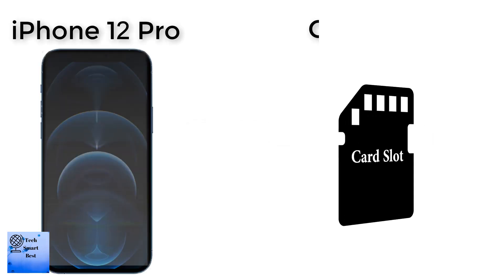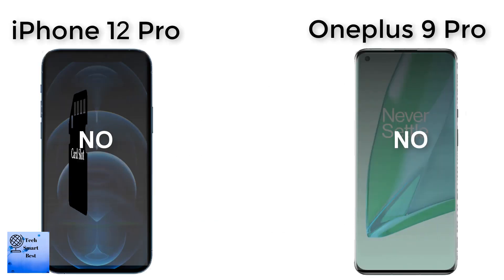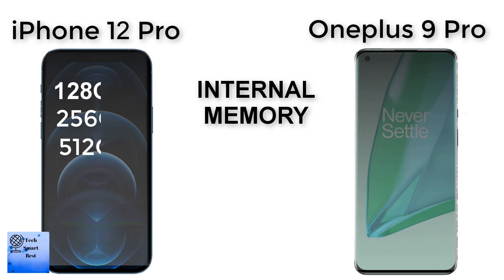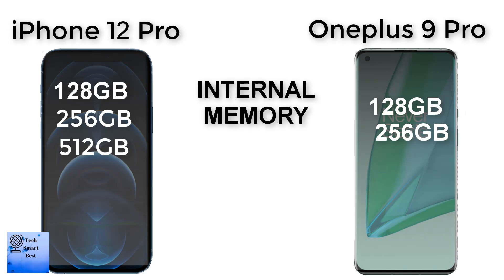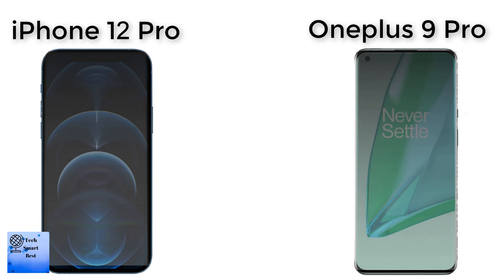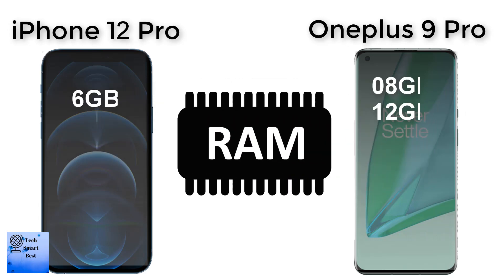The memory comparison between both smartphones. A card slot is not available in either smartphone. The internal memory of the OnePlus 9 Pro comes in 128 GB and 256 GB options. The internal memory of the Apple iPhone 12 Pro comes in 256 GB and 512 GB options. The RAM of the OnePlus 9 Pro is 8 GB and 12 GB, while the Apple iPhone 12 Pro has 6 GB RAM.